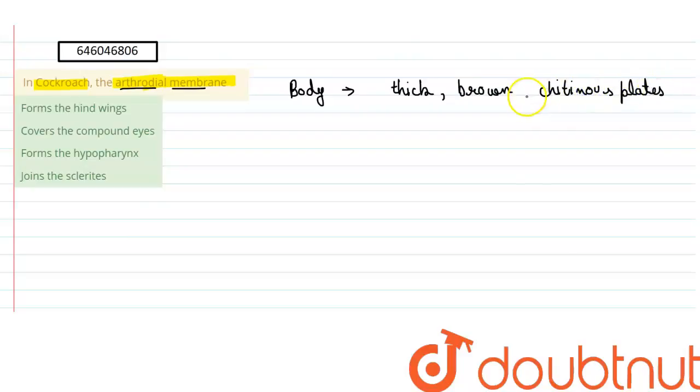These plates cover the entire surface of the body of the cockroach, and they also form the exoskeleton. These plates are called sclerites.